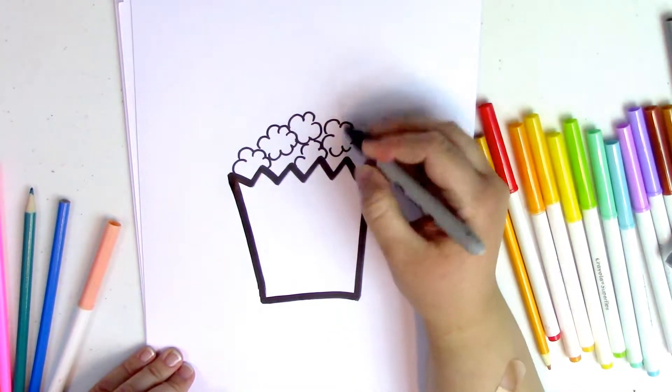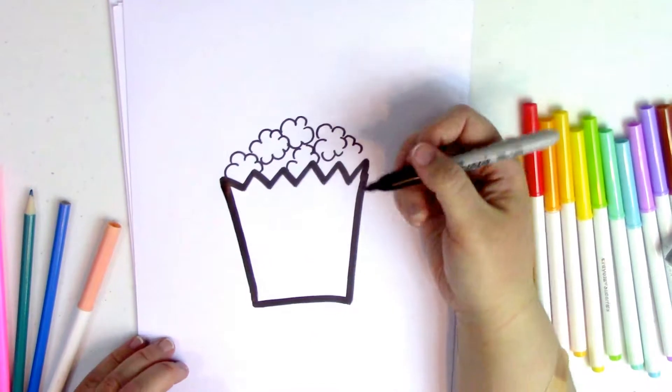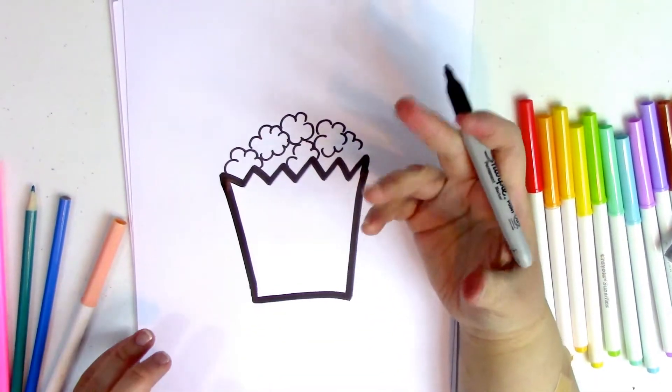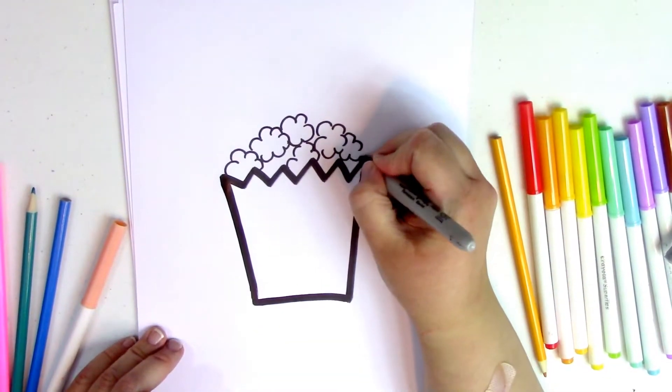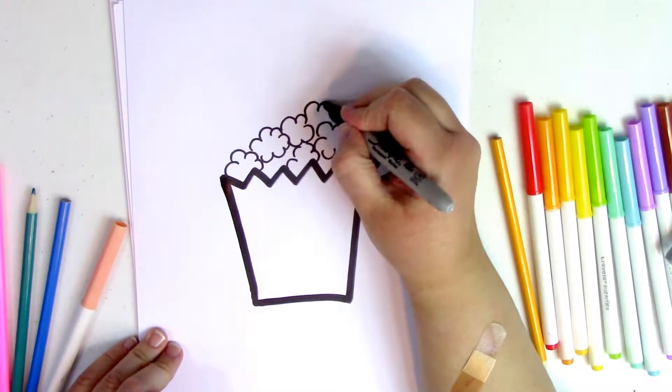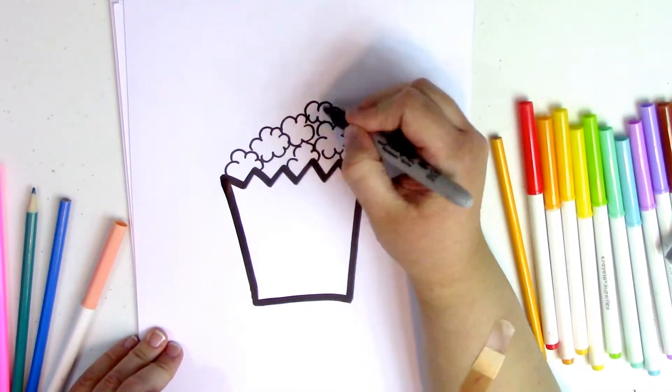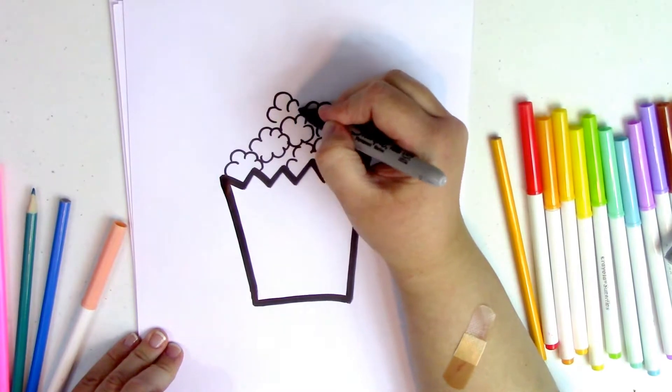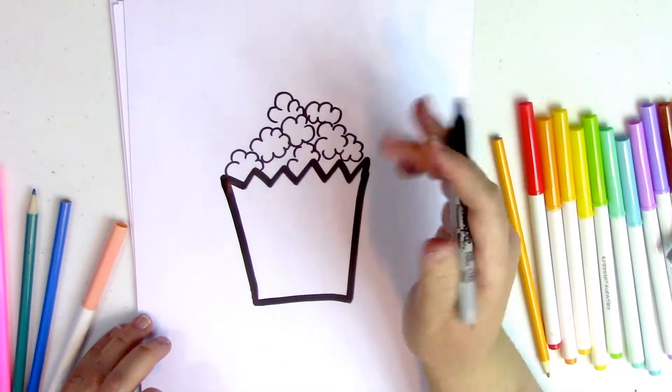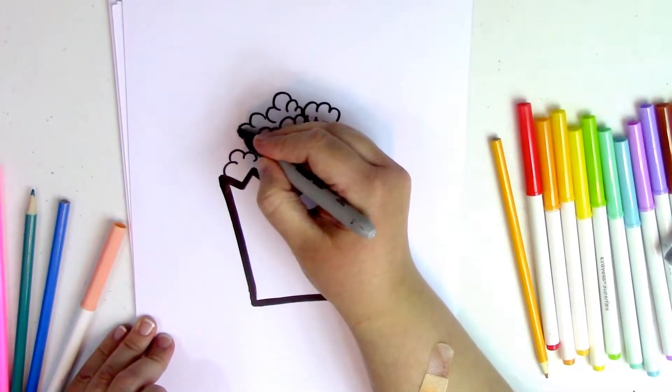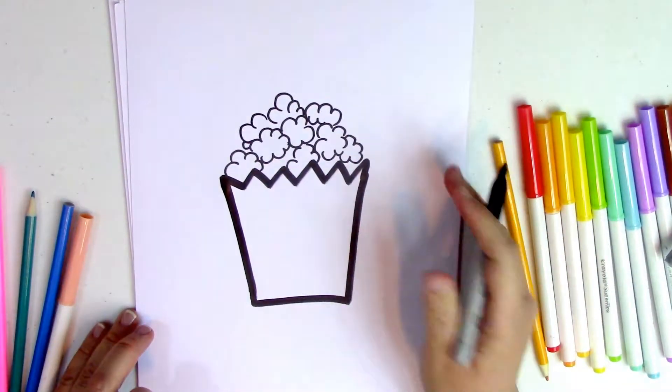What flavor of popcorn is your favorite, guys? I think my favorite is probably the cheese, but the orange cheese kind. I love the orange cheese kind of popcorn, and I love movie theater popcorn. It's like so good with the butter. Okay guys, I think that's pretty full. Let me do one more piece over here. Okay, awesome.